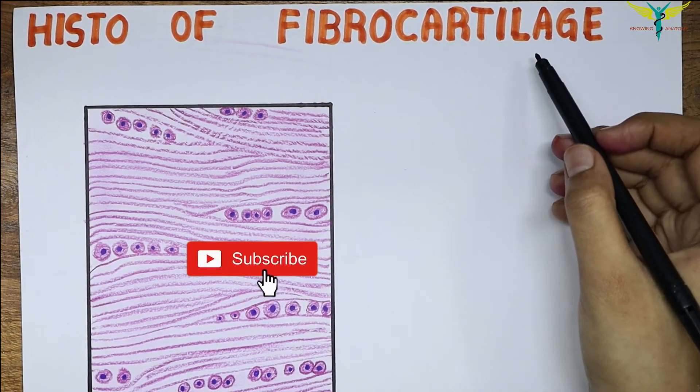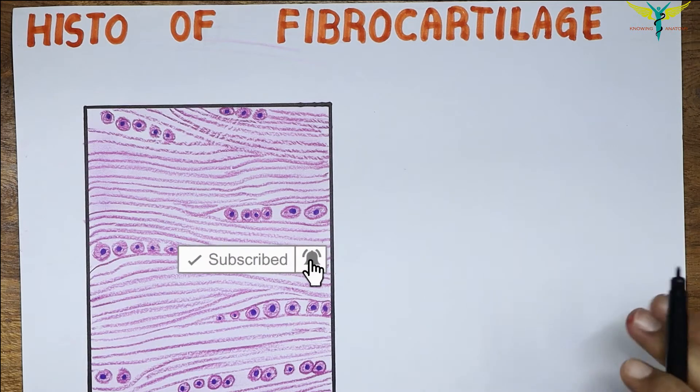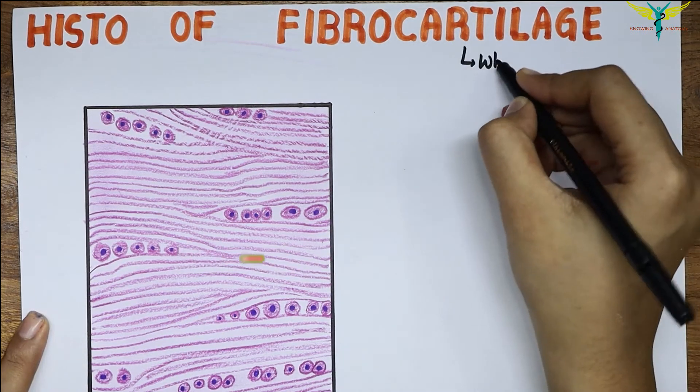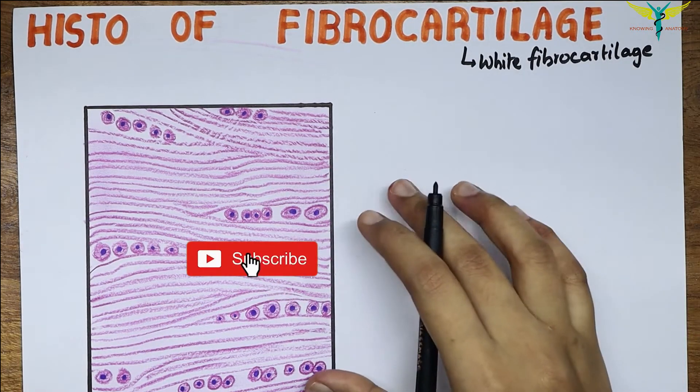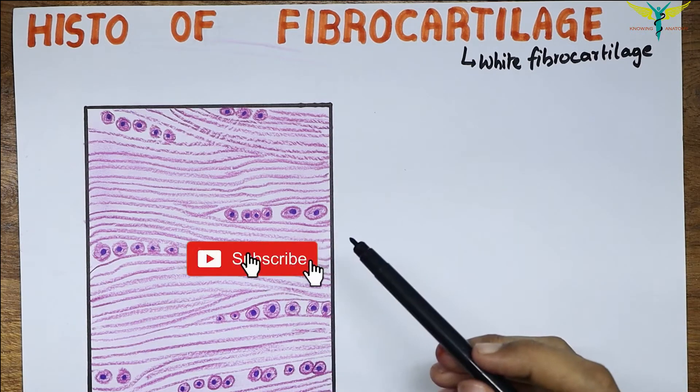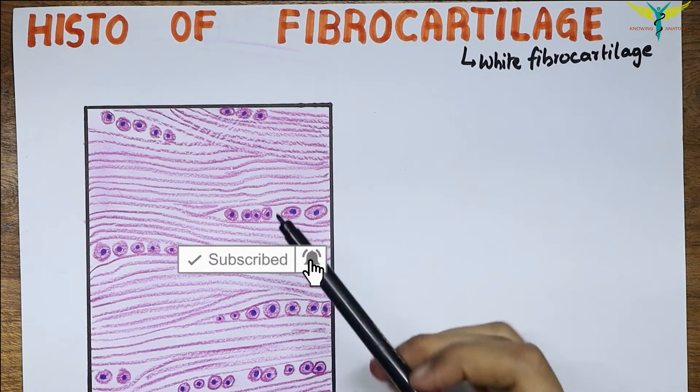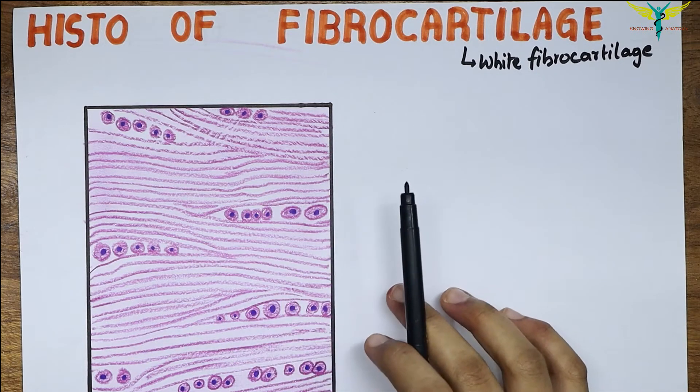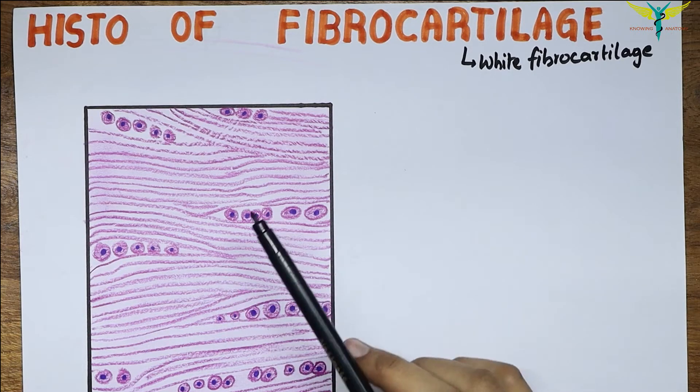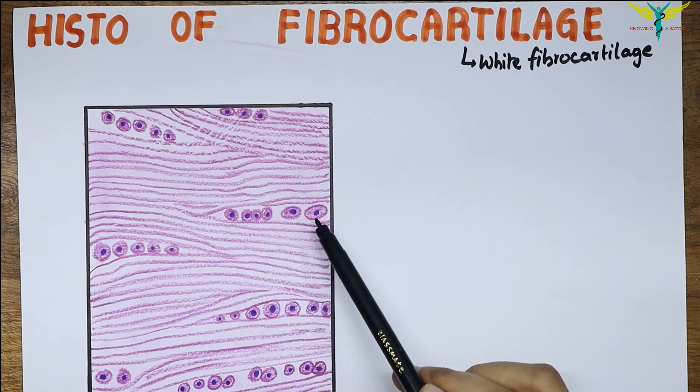Histology of fibrocartilage. This cartilage is also called white fibrocartilage. On superficial examination, this fibrocartilage looks very much like dense fibrous tissue.